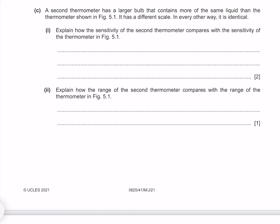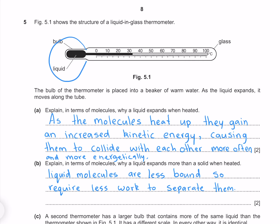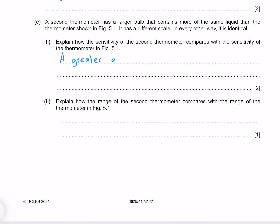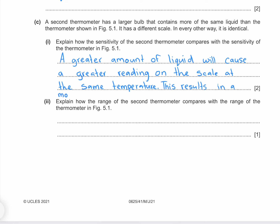A second thermometer has a larger bulb containing more of the same liquid, and in every other way is identical. Explain how the sensitivity of the second thermometer compares with figure 5.1. With a larger bulb and more liquid, at the same temperature more liquid expands, registering a larger value on the scale — meaning greater sensitivity. A greater amount of liquid causes a greater reading on the scale at the same temperature, resulting in a more sensitive thermometer.